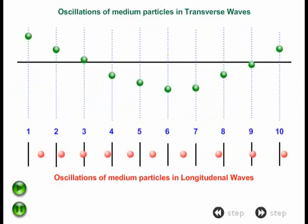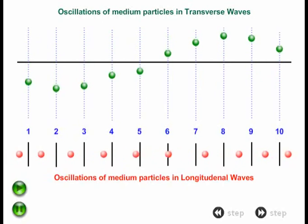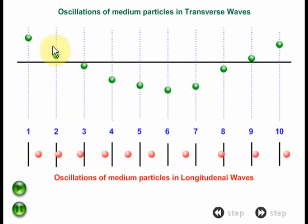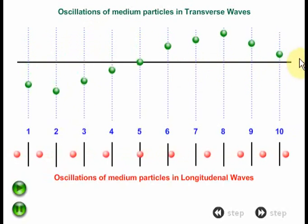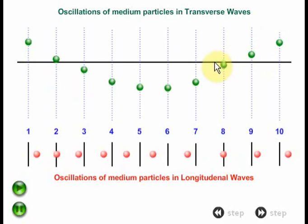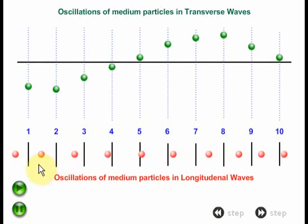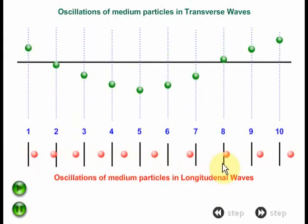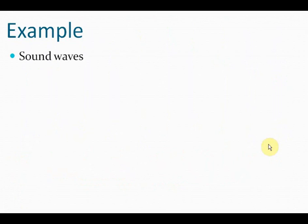In this animation, you can compare the movement of particles in case of transverse waves and longitudinal waves. In transverse waves, particles are moving perpendicular to the direction of wave motion, which is from left to right. In longitudinal waves, the particles are moving from left to right as the wave moves from left to right. Simple, isn't it? A practical example of longitudinal waves is sound waves.